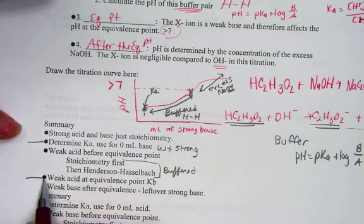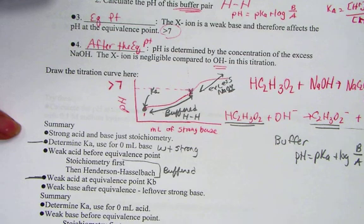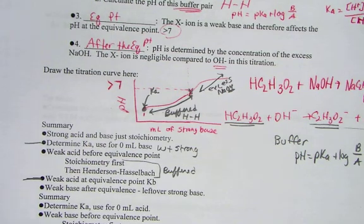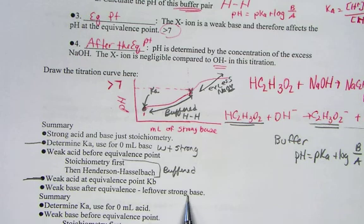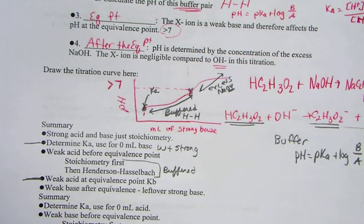A weak acid at the equivalence point is equal to its Kb. A weak base after its equivalence is the strong base that's left over. So again, we're just repeating. If we have weak base after equivalence, we have leftover strong base. It will then be determined by using pOH.